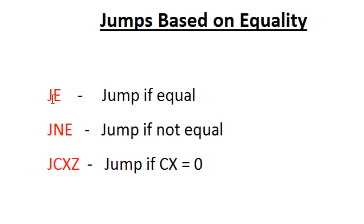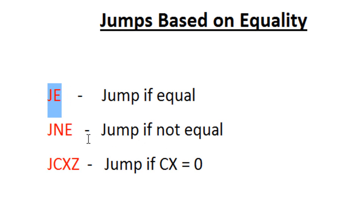If two operands are equal in the case of JE, then the jump happens. JE is equivalent to JZ. The only difference is JE just jumps based on the two operands — if they're equal, then it jumps. JNE jumps if the two operands are not equal, so if the two operands are not equal, then the jump happens.